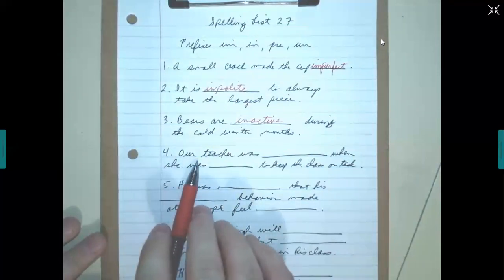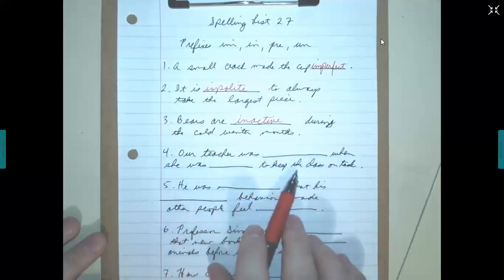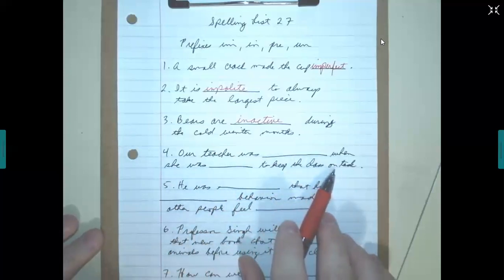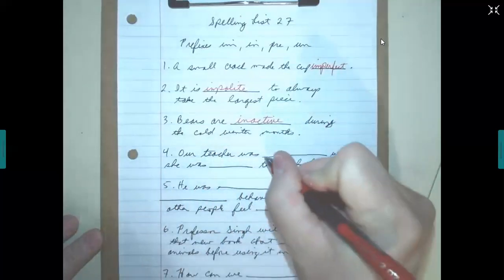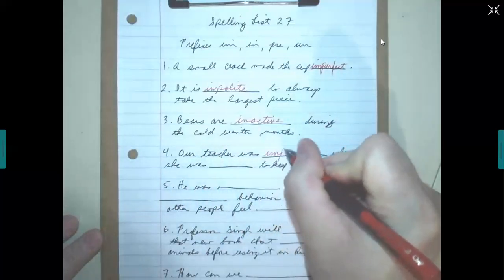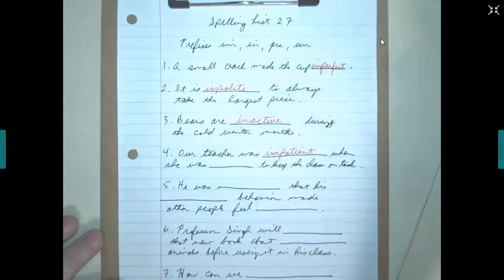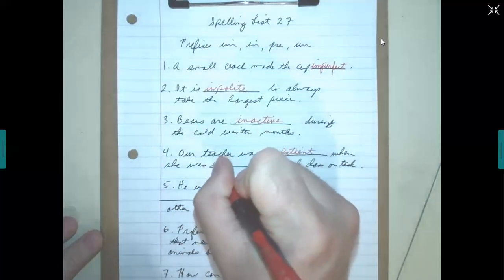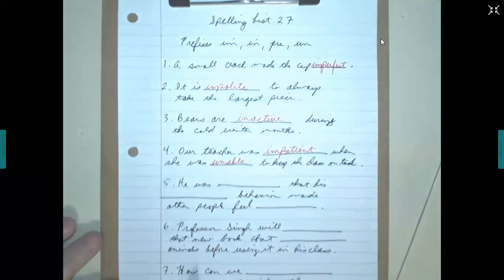All right. Next. Our teacher was blank when she was blank to keep the class on task. So I would say our teacher was impatient. You have seen me become impatient at times this year. Our teacher was impatient when she was unable, not able to keep the class on task.